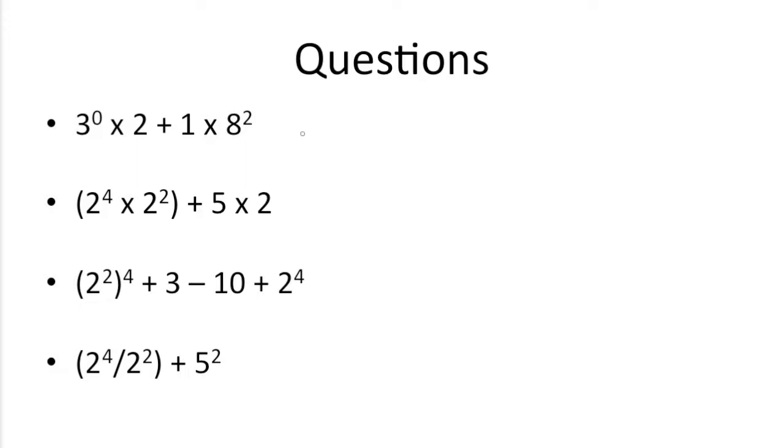So if you remember the order of operations, what we need to do first are the exponents, since there are no parentheses here. So 3 to the 0, anything to the 0 power is always going to be 1, times 2 plus 1 times 8 squared, which is 64.